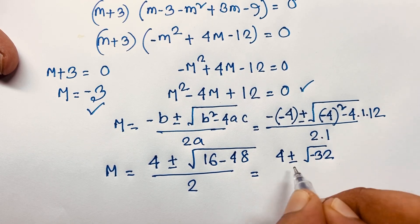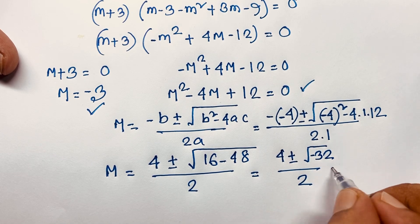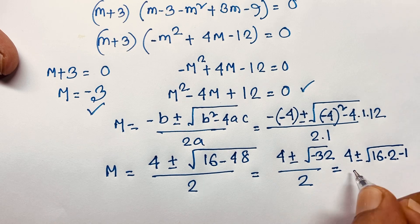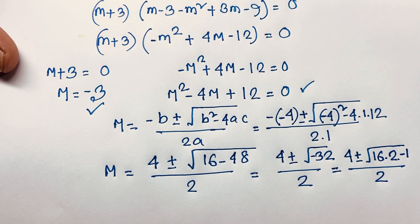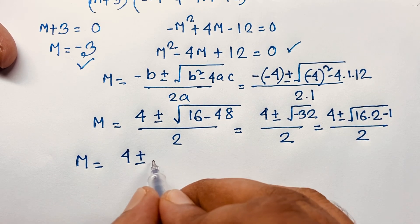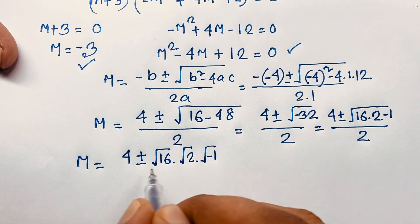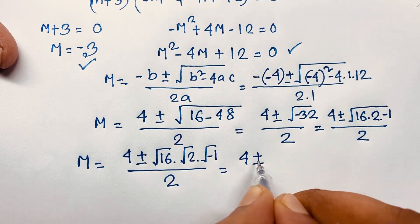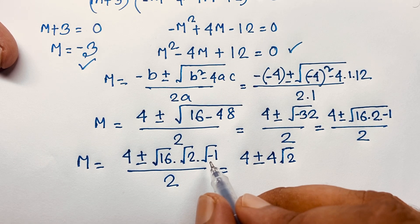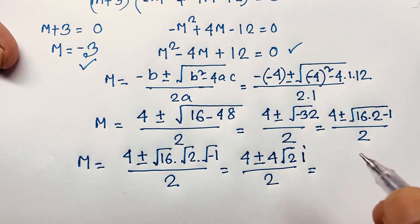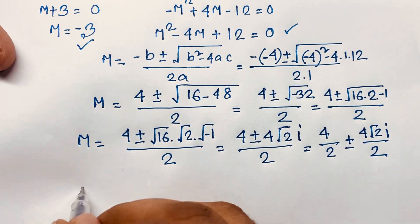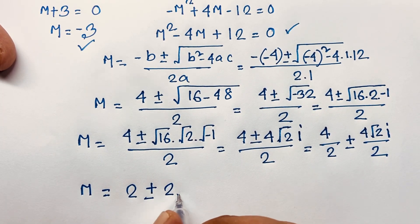Now here 16 minus 48 equals negative 32, so m equals 4 plus or minus square root of negative 32 over 2. We write negative 32 as 16 times 2 times negative 1, over 2. Square root of 16 is 4, and square root of negative 1 is i — that is a complex number — so it becomes 4 plus or minus 4 root 2 times i, over 2. Separating: 4 over 2 plus or minus 4 root 2 i over 2, giving m equals 2 plus or minus 2 root 2 i.